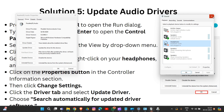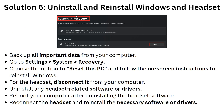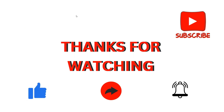Now we are going to solution 6: reinstall or uninstall your Windows and headset software. First, back up all your important data. Go to Settings > System > Recovery and choose 'Restart this PC', then follow the on-screen instructions. For the headset, reconnect it, then install any headset-related software or drivers. Reboot your computer after uninstalling the headset software, then reconnect and reinstall the necessary software.